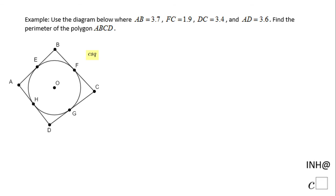Welcome back and I need help at Cisco. In this example we have a diagram where AB is 3.7, which is the whole segment AB. FC is 1.9, which is this part of BC.